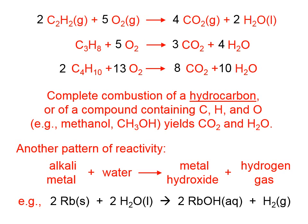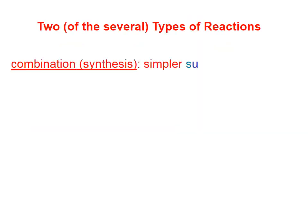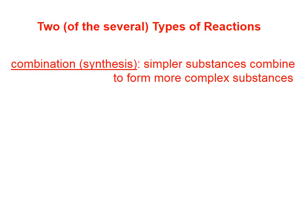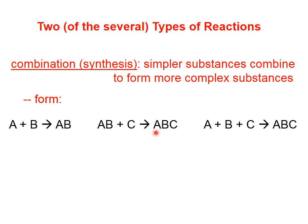Two of the several types of reactions, combination or synthesis reactions, are ones in which simpler substances combine to form more complex substances. So a combination or a synthesis reaction basically starts with simpler things, A and B, and forms something more complex, AB. Or starts with AB and C and forms the more complex thing, ABC, and so on.